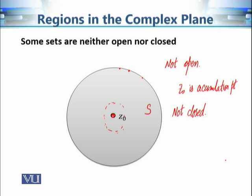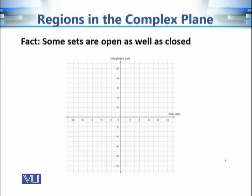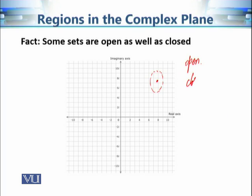There are many other examples of sets that are neither open nor closed. We can also find examples that are both open and closed. Consider the entire complex plane: it is open because every point has a neighborhood contained in the plane. It is also closed because there is no boundary — and since a set is closed if it contains all its boundary points, with no boundary the condition is vacuously satisfied.